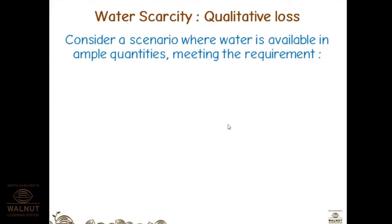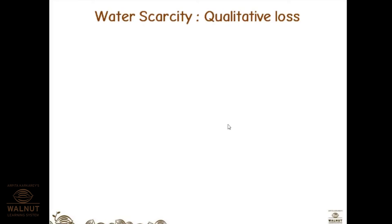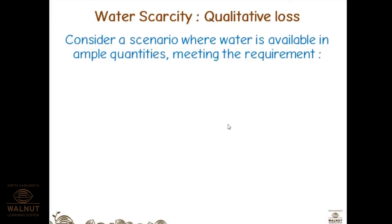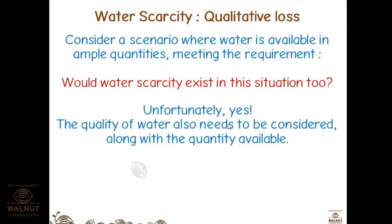Now we discuss qualitative loss. So far we have talked about water scarcity in terms of the stock available for use. Qualitative loss relates to the quality of water. As the word suggests, we are dumping all trash and industrial waste into water sources, damaging the purity of water. Consider a scenario where water is available in ample quantities meeting all requirements — would water scarcity still exist? Unfortunately yes.